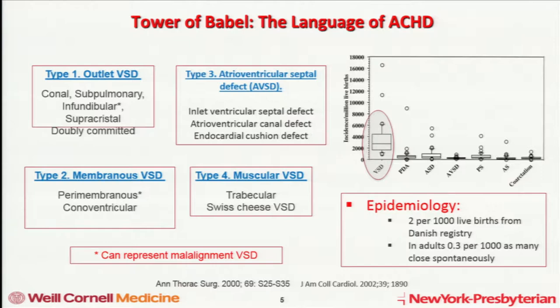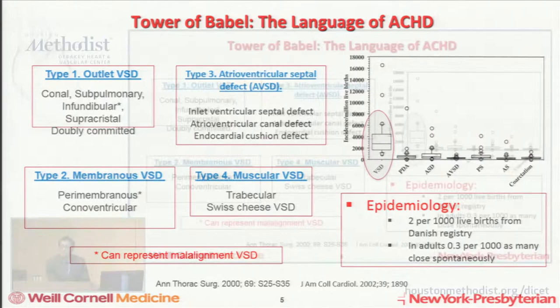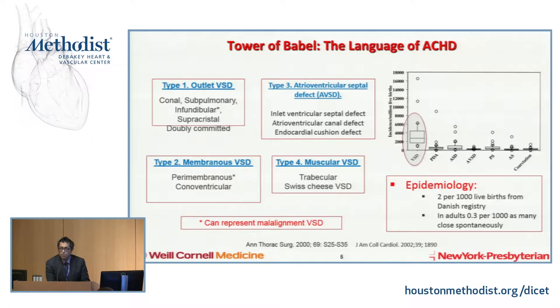Among the four types, there are also malalignment VSDs, which can occur in the perimembranous region but also in the infundibular region. Those are usually linked with other congenital heart disease lesions, such as Tetralogy of Fallot. Simple VSDs in and of themselves are the most common form of simple congenital heart disease if you take away bicuspid valves and mitral valve prolapse — quite common, at two per 1,000 live births — but VSDs are often part of other complex congenital heart lesions.